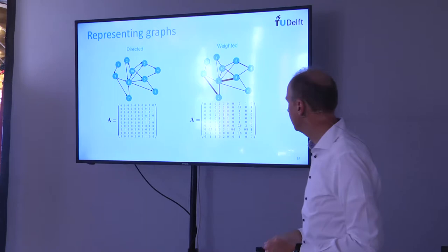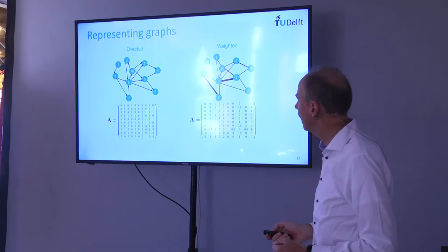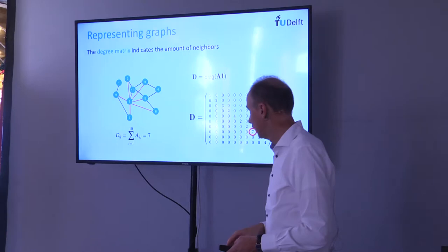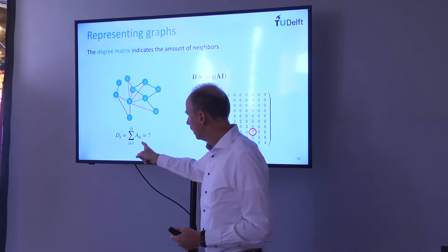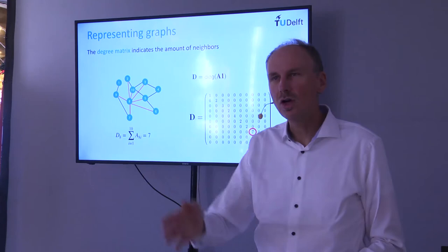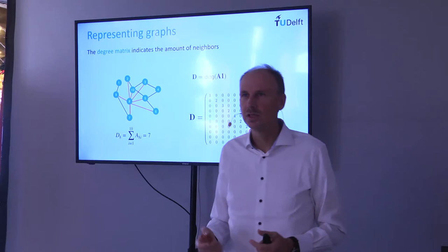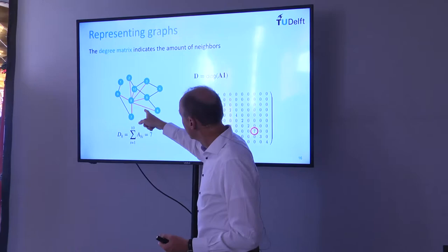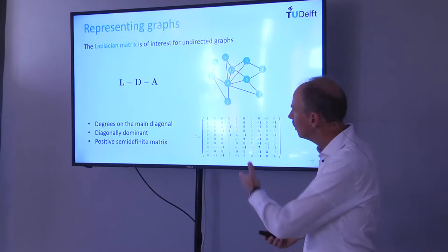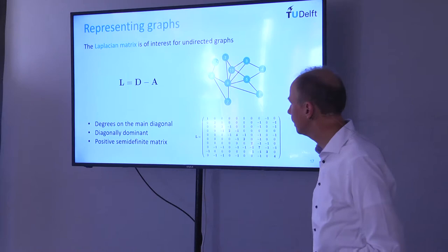For directed and weighted graphs the meaning of entries depends on the application. The degree matrix D is the sum of weights along the rows of the adjacency matrix — for node 8 with 7 neighbors the degree is 7. The Laplacian L = D - A is diagonally dominant, positive semi-definite, and typically considered for undirected graphs, giving negative off-diagonal entries.